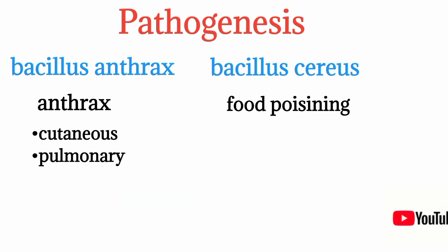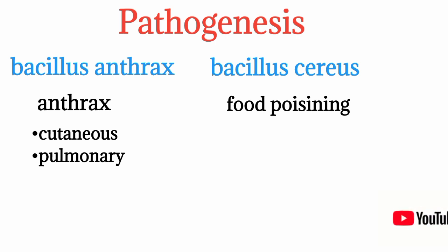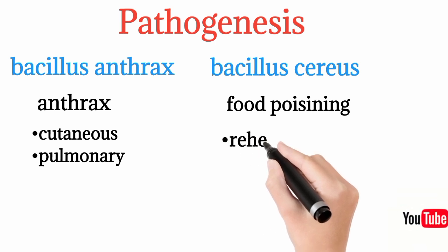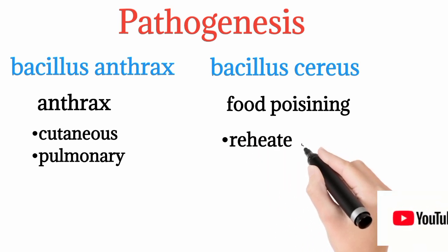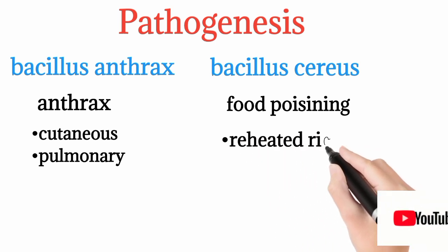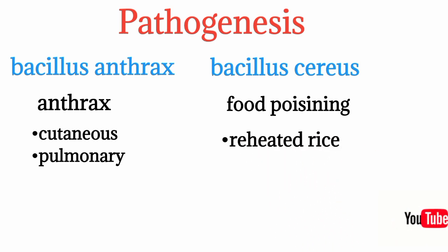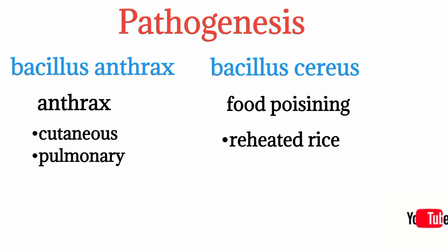Bacillus anthracis spores or exotoxins can enter the body through skin wounds, causing cutaneous anthrax, or through the respiratory tract, causing pulmonary anthrax.